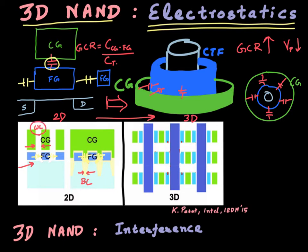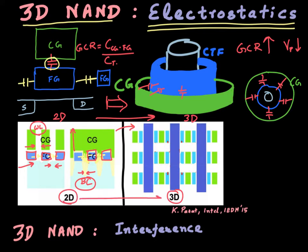As you scale your word line and bit line, these floating gates come close to each other and the coupling between them increases. You can't make these floating gates thinner or scale the vertical dimension of the gate stack in general, so as you scale the lateral dimension, this coupling becomes worse and worse.